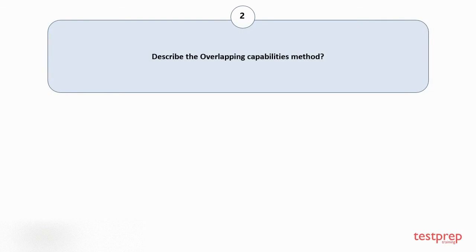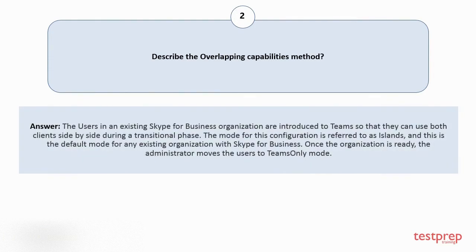Question number 2: Describe the overlapping capabilities method. The users in an existing Skype for Business organization are introduced to Teams so that they can use both clients side by side during a transitional phase. The mode for this configuration is referred to as islands, and this is the default mode for any existing organization with Skype for Business. Once the organization is ready, the administrator moves the users to teams-only mode.